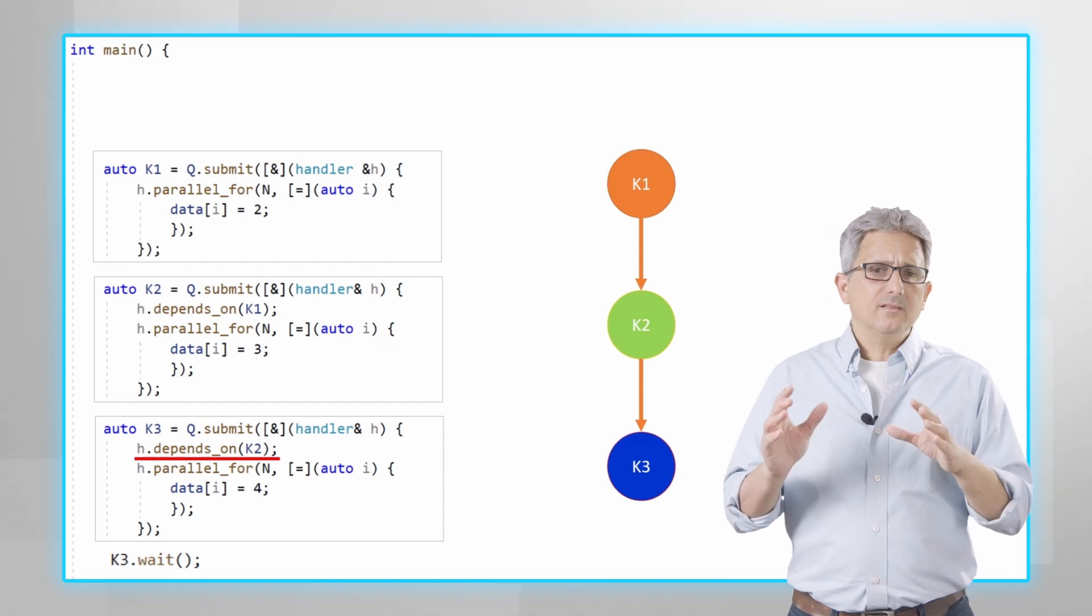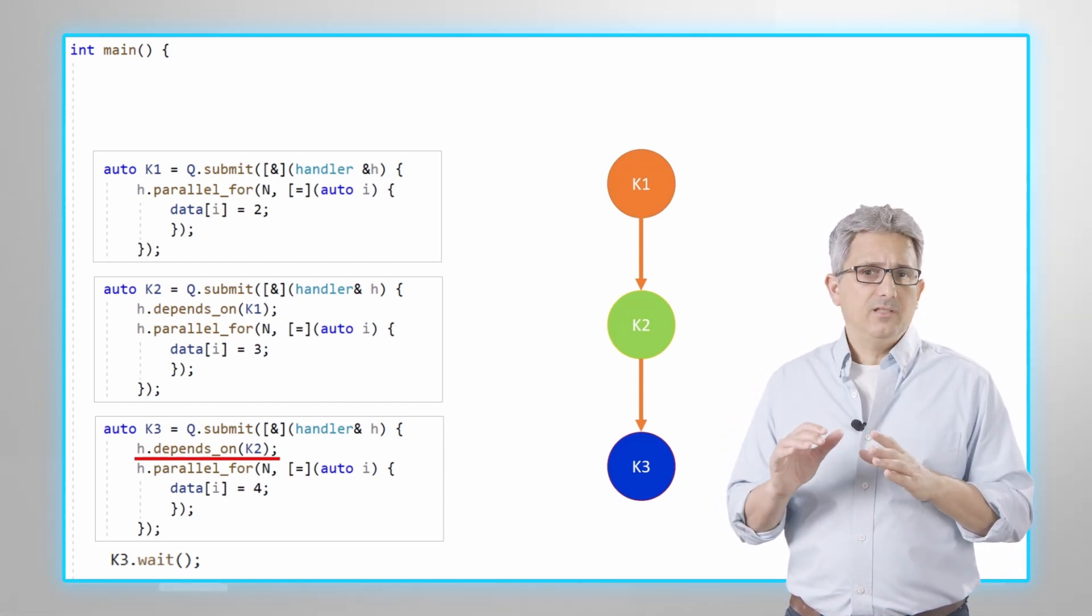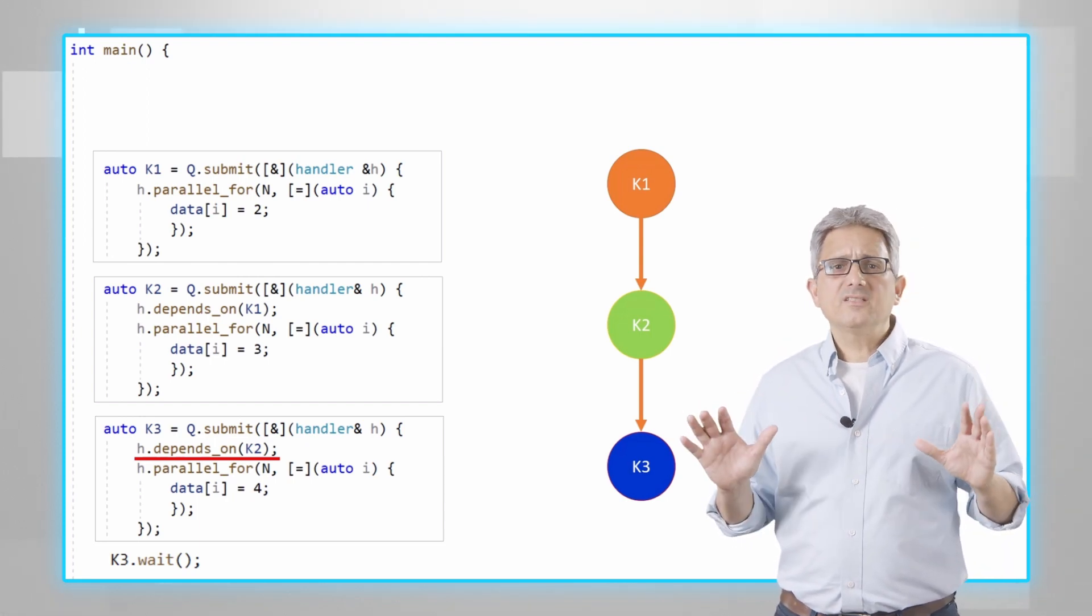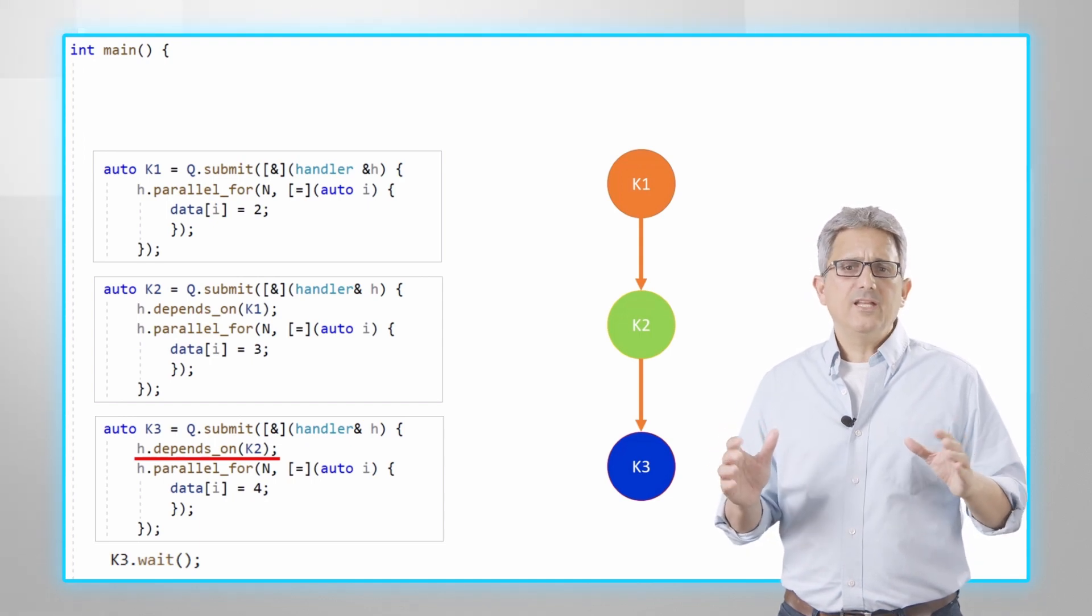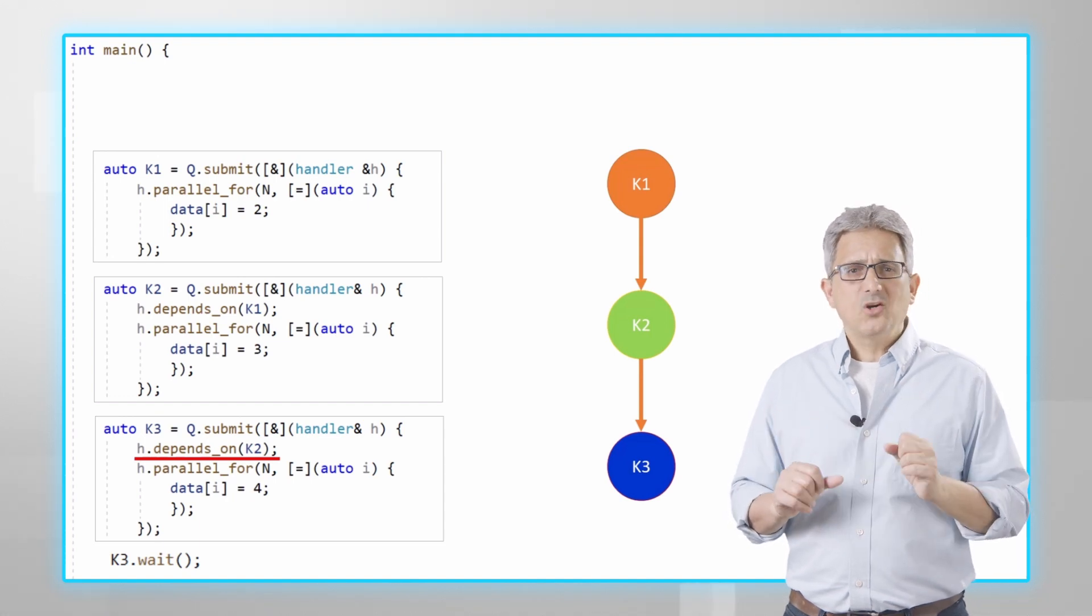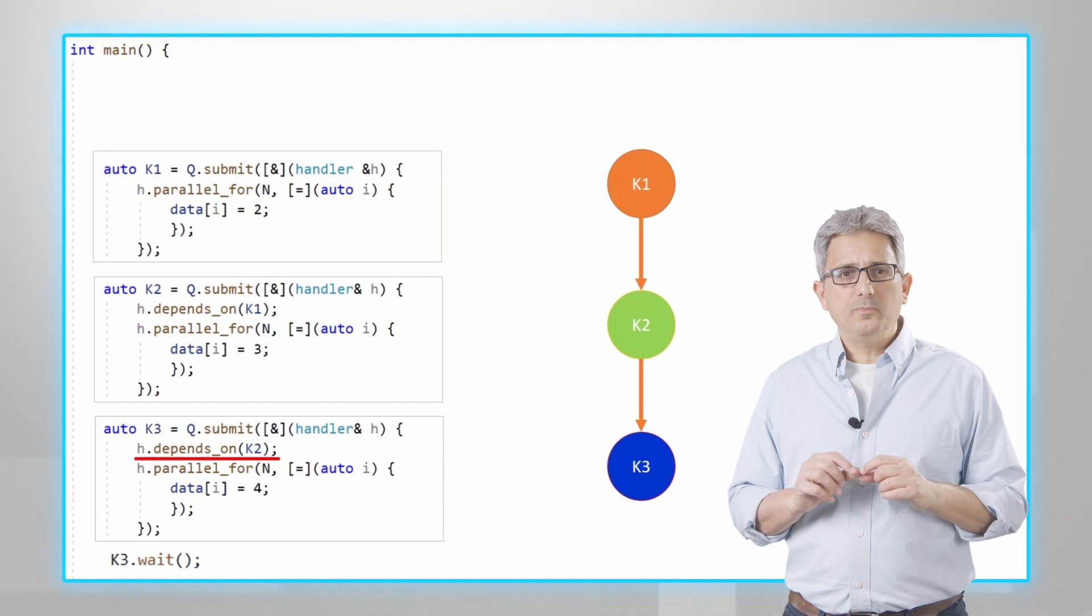Please note that at the end I'm not waiting for a queue, but I'm waiting on an event, here waiting on event K3. All of these synchronization examples are basically doing the same thing and should give similar performance. Feel free to try them all out and compare, and look for the link to the code below.